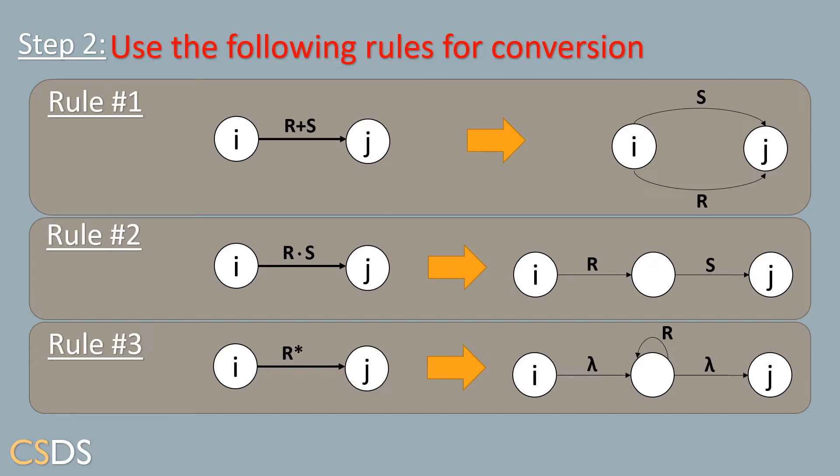Our third and final rule is a transition with a star, meaning a self-loop. This will be converted to a lambda followed by a new state, which has a self-loop with that same R followed by a transition with a lambda.